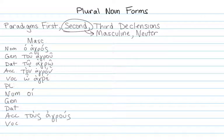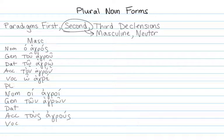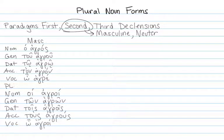We've seen that the plural definite article for the masculine is hoi, and for the accusative is tus. We've even seen the full phrase tus agrus before. For the nominative, the form is agroi, hoi agroi. We'll also learn in this chapter the genitive, ton agron, and the dative, tois agrois. The vocative is o agroi.